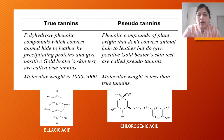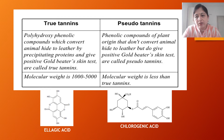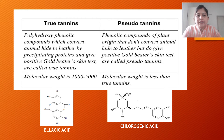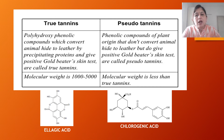True tannins are polyhydroxy phenolic compounds which have the ability to convert animal skin into leather. They give a positive gold beater's test. The molecular weight of true tannins ranges from 1000 to 5000. Pseudo tannins are similar to tannins in many features but do not convert animal hide into leather, giving a negative gold beater's test. The two structures shown are ellagic acid, which is a true tannin found in amla, and chlorogenic acid, which is a pseudo tannin found in tea.